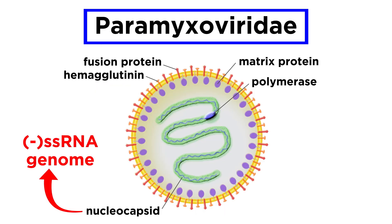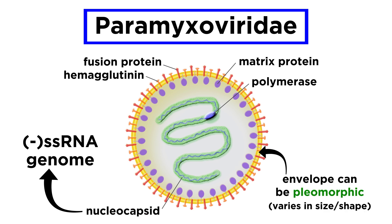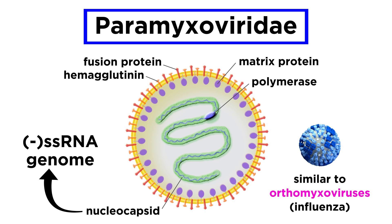Paramyxoviruses are made up of negative-sense single-stranded RNA that's packaged in a helical nucleocapsid and surrounded by an envelope. In the case of paramyxoviruses, the envelope is pleomorphic, which means it can vary slightly in size and shape. Paramyxoviruses are similar to orthomyxoviruses like influenza, but they tend to be larger and don't have the segmented genome that influenza viruses do.